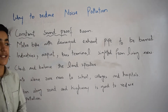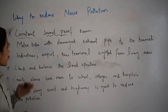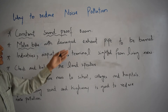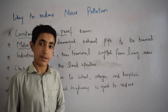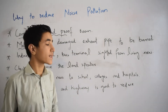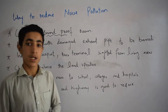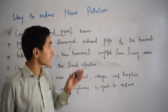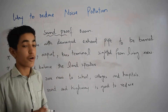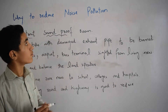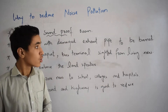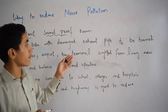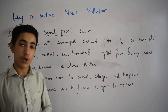The second way is motorbikes with modified exhaust pipes should be banned. In daylight, you will see a lot of motorbikes, and some motorbikes have modified exhaust pipes. These modified exhaust pipes create very high noise pollution. So we need to ban them. If you ban them, noise pollution will not be produced.